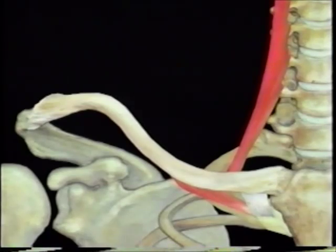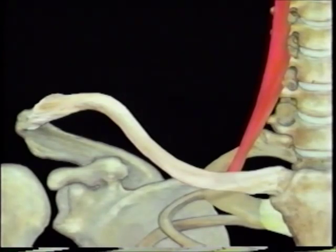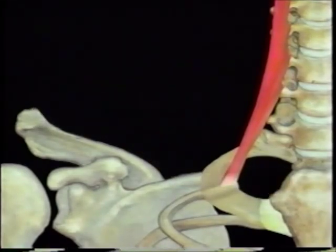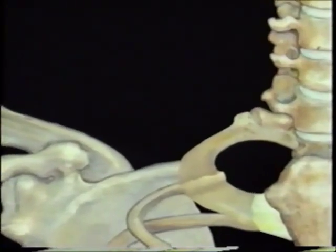The costoclavicular space is bounded anteriorly by the subclavian muscle, the costoclavicular ligament, and the clavicle, and posteriorly by the anterior scalene muscle and the first rib.